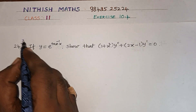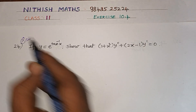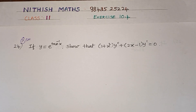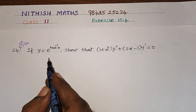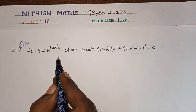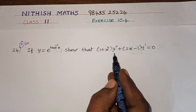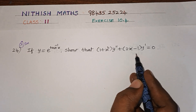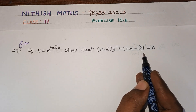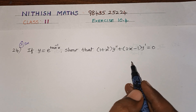It is very important — 5 more questions. If y equals e to the power tan inverse x, show that (1 + x²) y'' + (2x - 1) y' = 0.